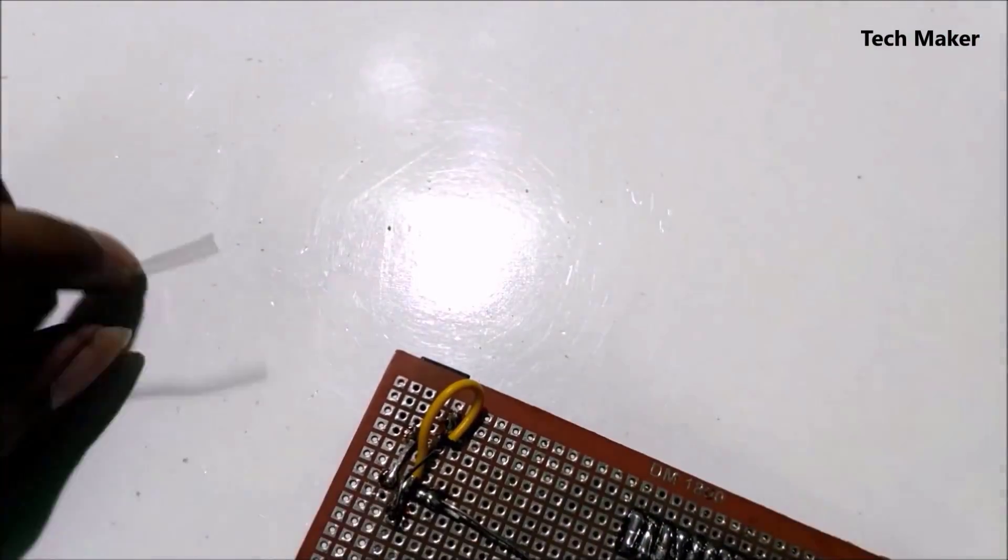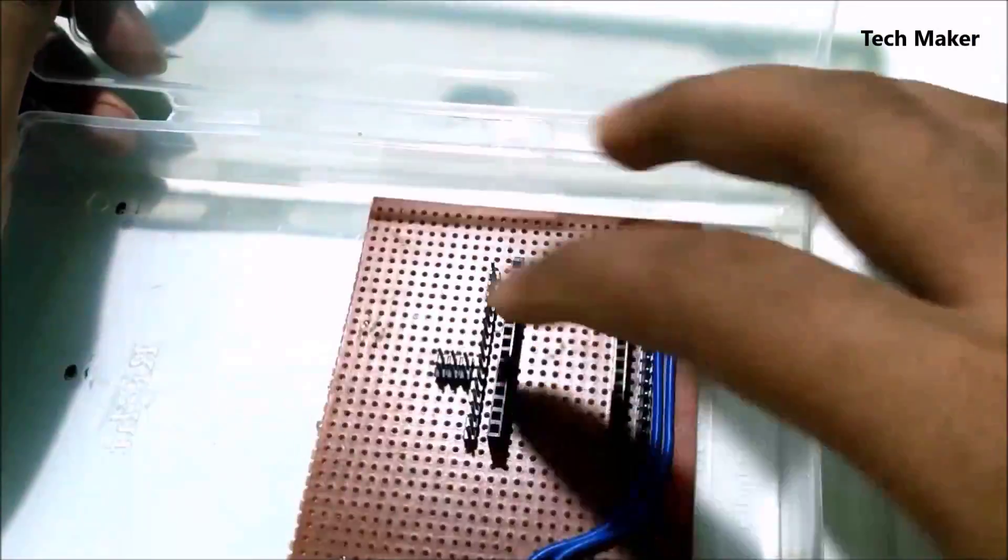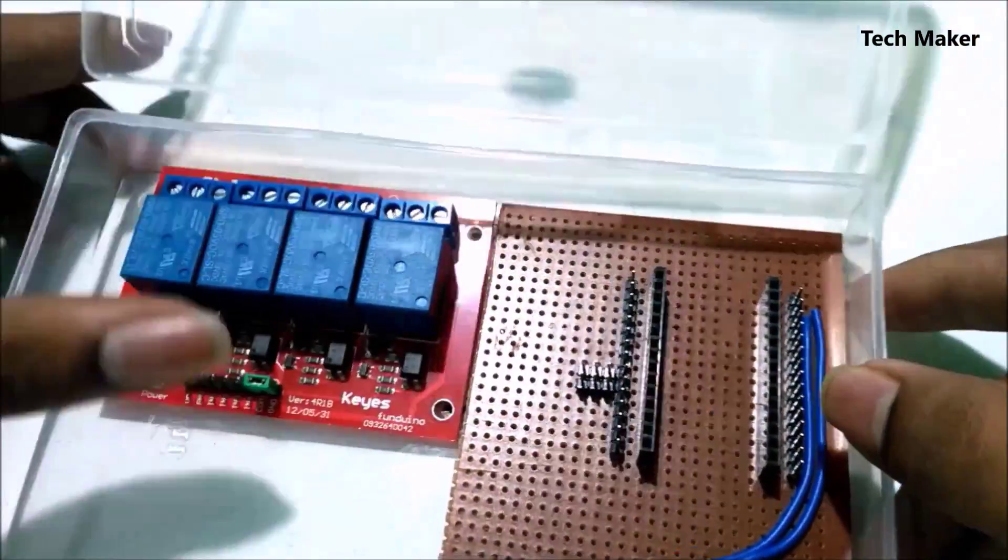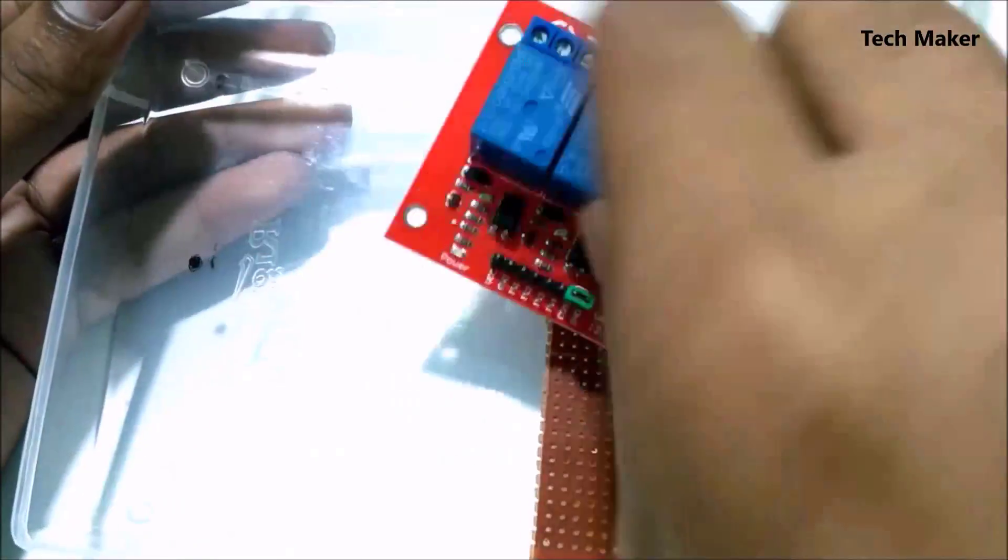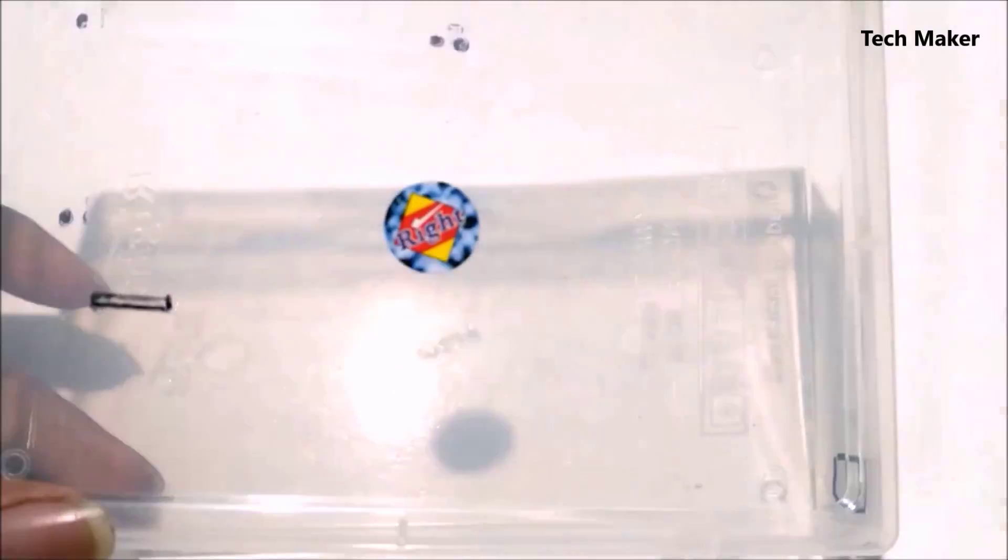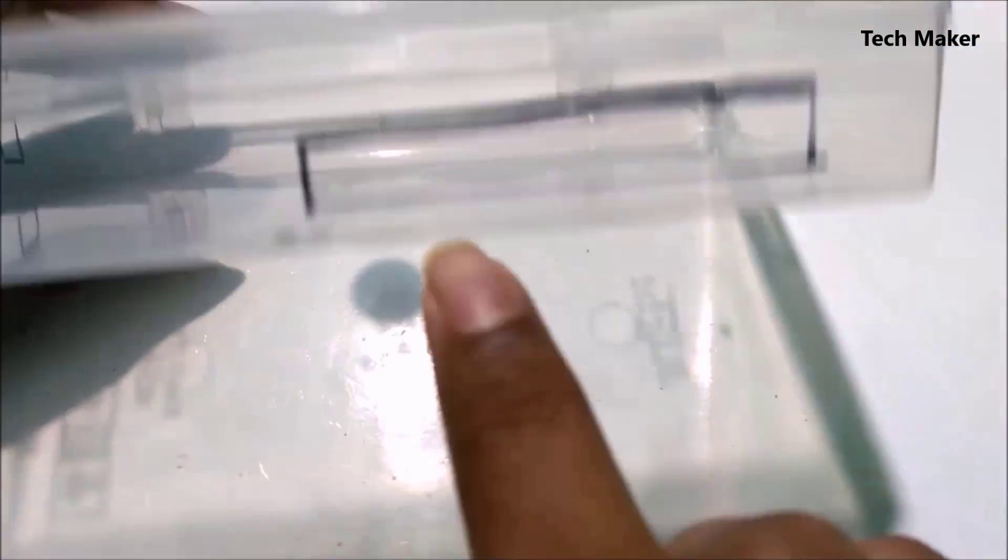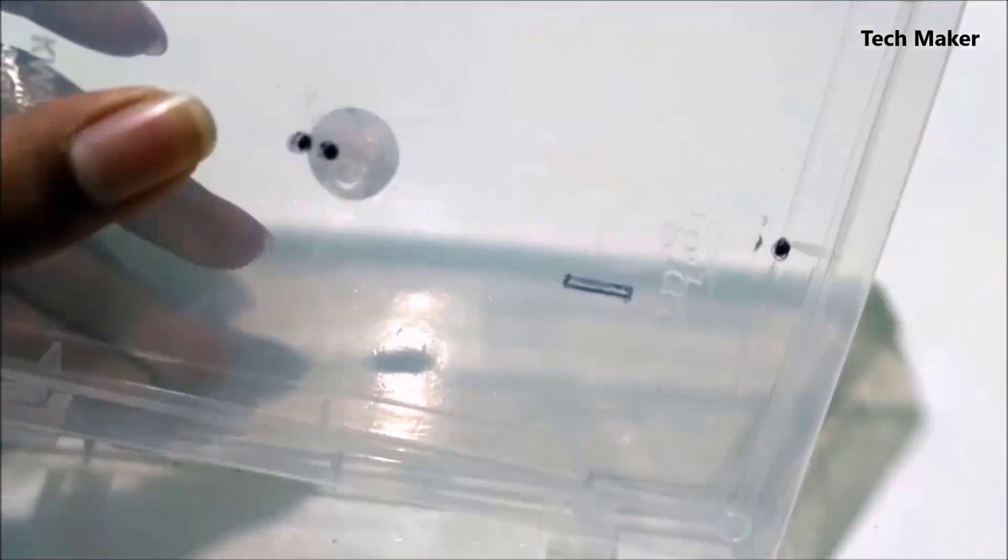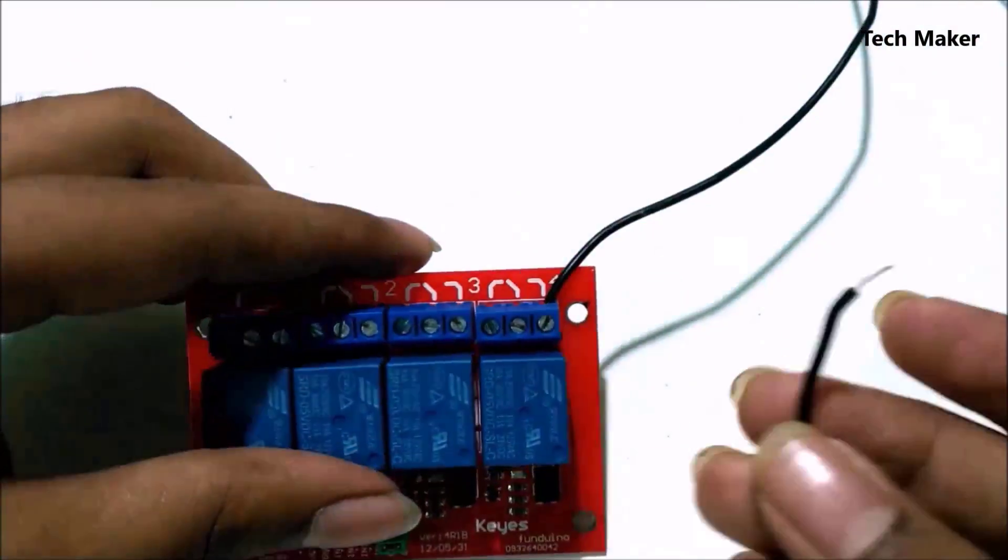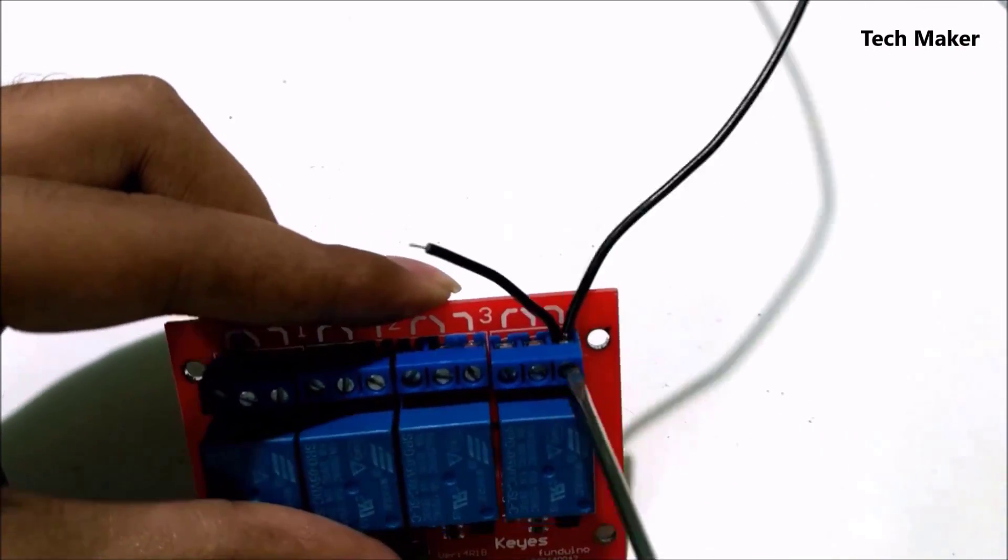This is the plastic box. You have to first set this and mark it for the holes. Now wire the relay as given in the circuit.